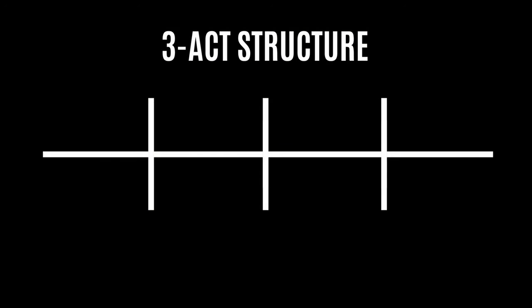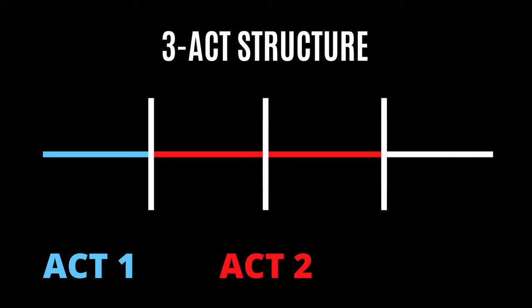These 15 steps are based upon three-act structure, which is a way of structuring a story where you break it into three parts. Act one is the first 25% of your story — this is where we get introduced to the heroes and their situation. Act two is the middle 50%, where heroes go through trials and challenges and start changing as people. The final act, act three, is the last 25%, where the hero confronts the villain and usually wins.